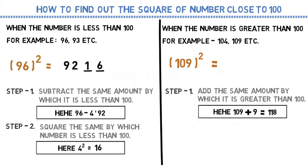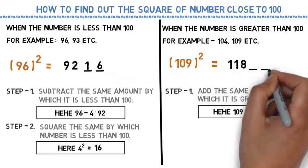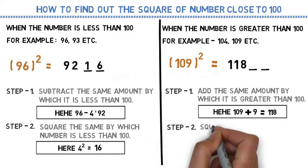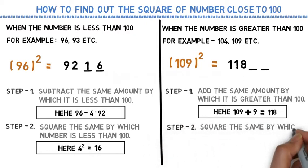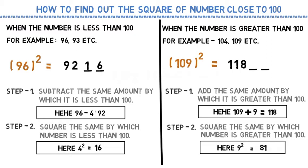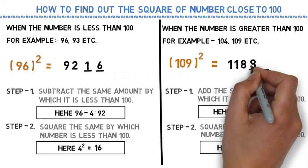118. These are the initial digits of our answer. Again there would be 2 spaces. In step 2, you need to take the square of the number by which it is greater than 100. Here we have 9, so 9 square is 81. 81 are the last 2 digits of our answer. 109 square is 11881.